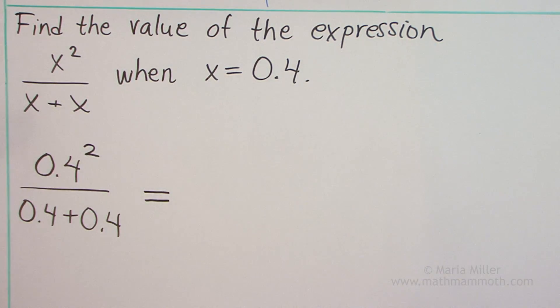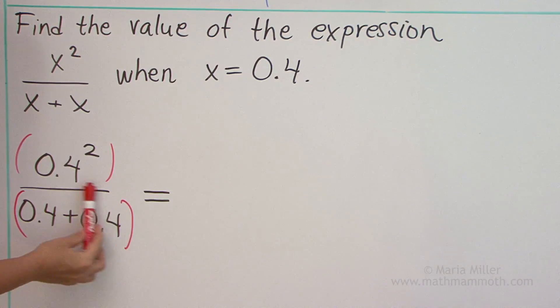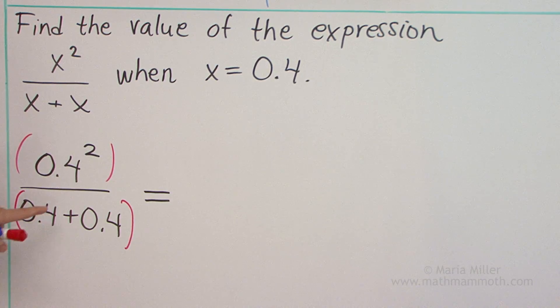Now we need to calculate its value using order of operations. Now you remember that this has implied parentheses here for both the top and bottom part. So we need to do this before we divide. We need to do this before we divide. The division is done last. And that is always true when we are using fraction lines to indicate division.